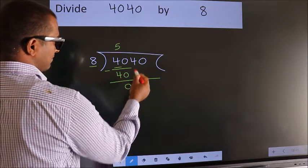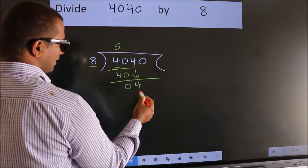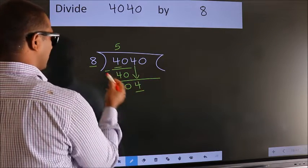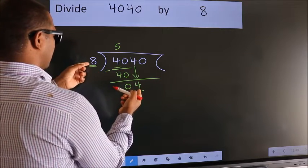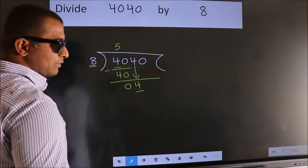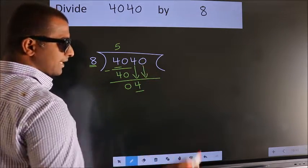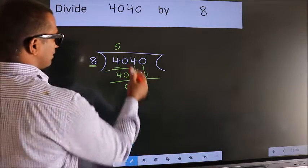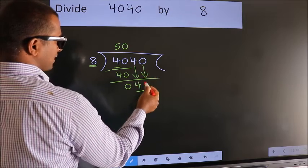After this, bring down the beside number. So 4 down. Here we have 4, here 8. 4 is smaller than 8, so we should bring down the second number. And the rule to bring down the second number is put 0 here. Then only we can bring down this number.